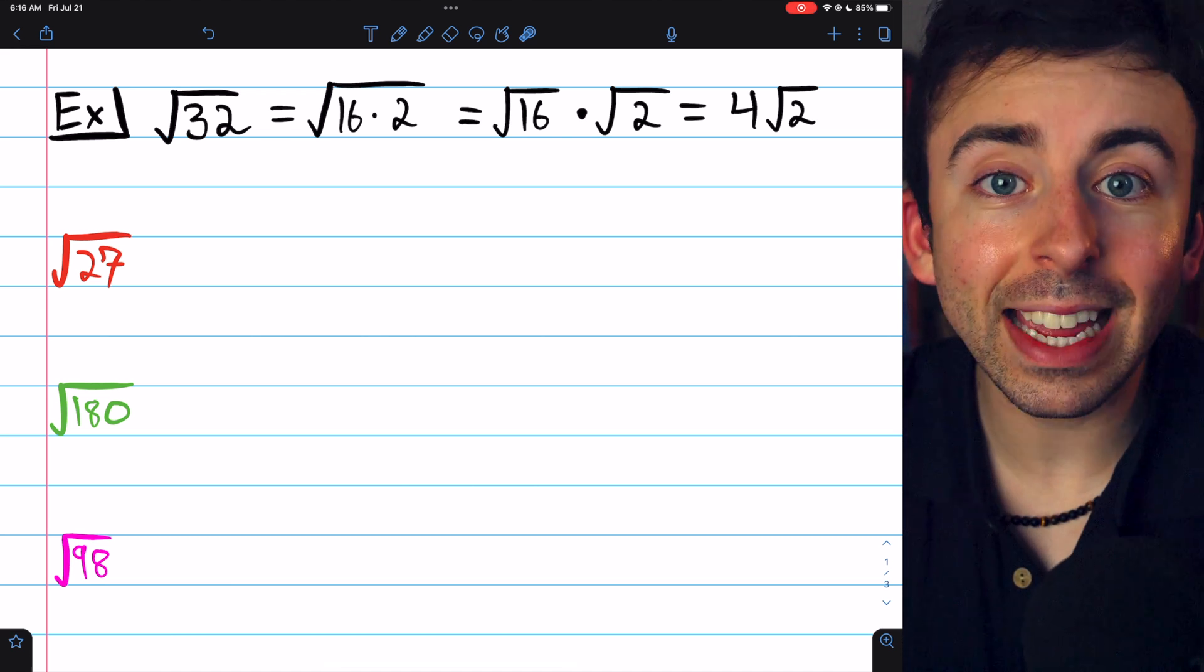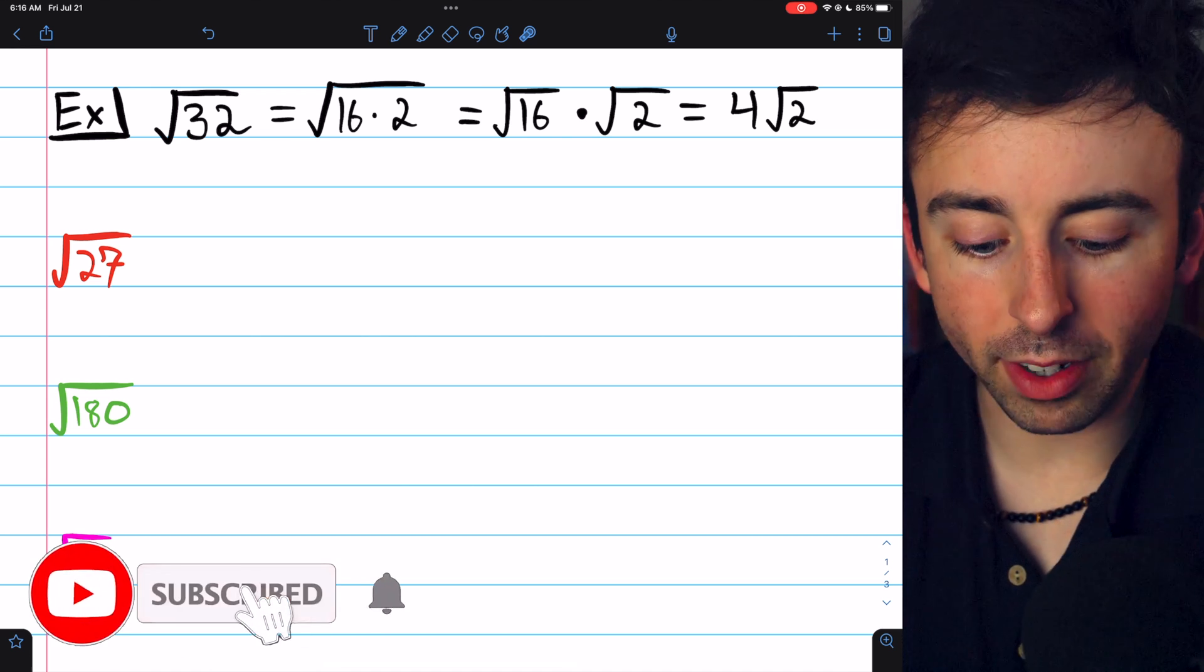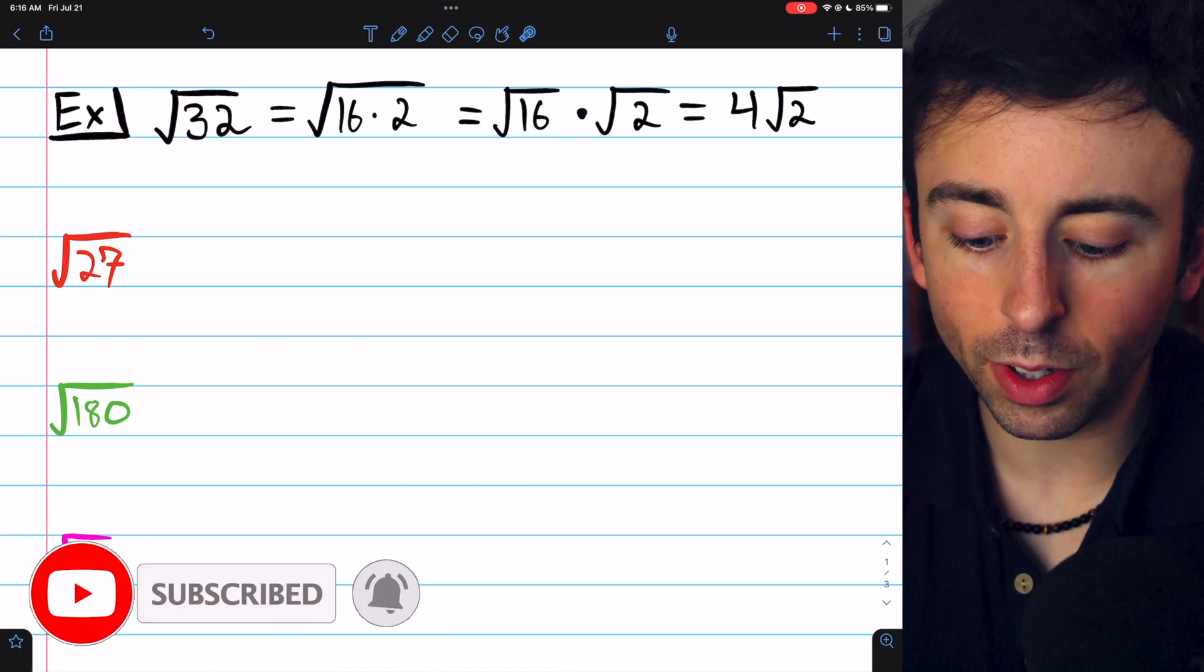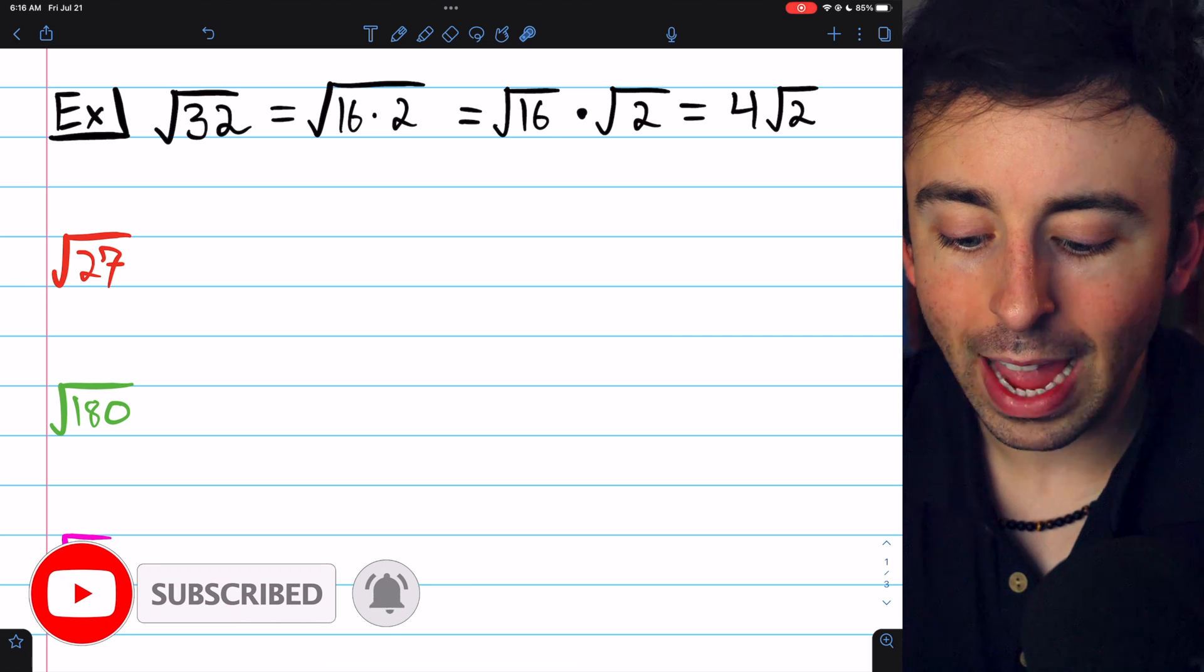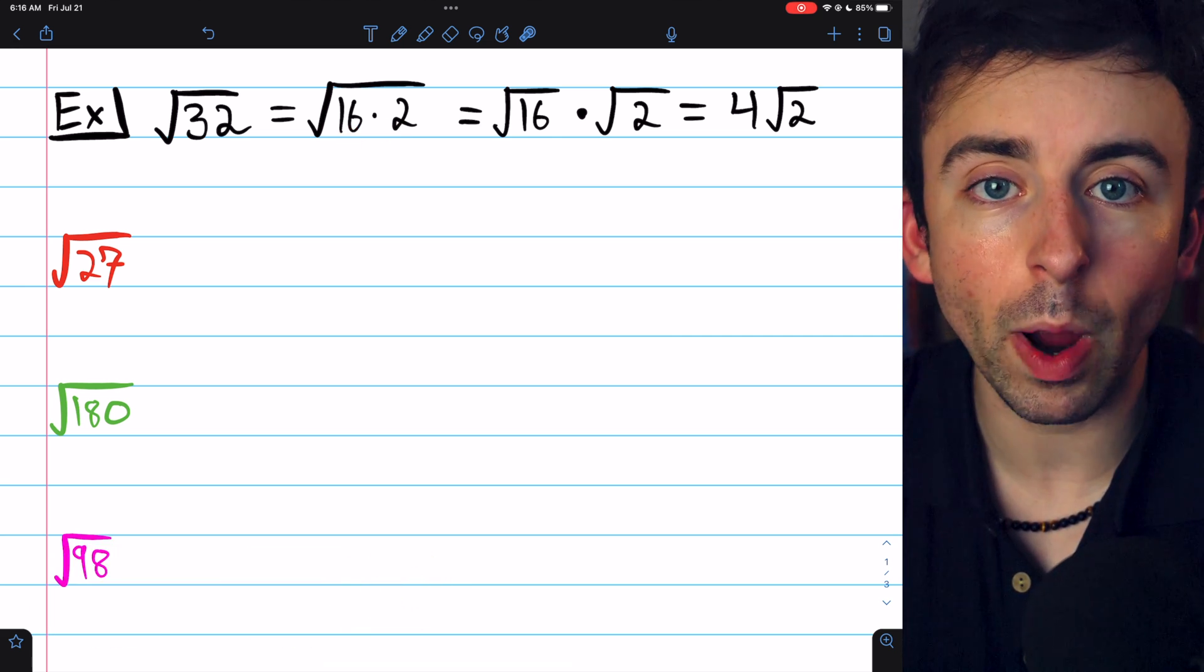Any square number can be taken out of a square root. For example, 32 equals 16 times 2, and 16 is a perfect square.